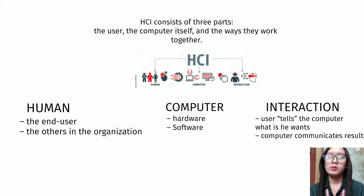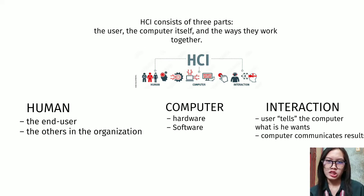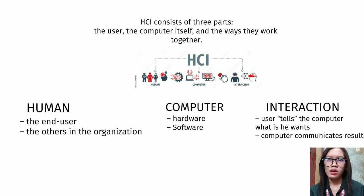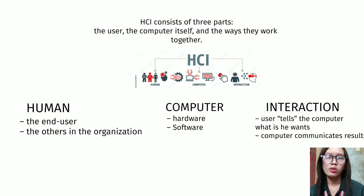The human involves the end user and others in the organization, while the computer involves hardware and software. The interaction is when the user tells the computer what they want, and then the computer follows and returns the results.